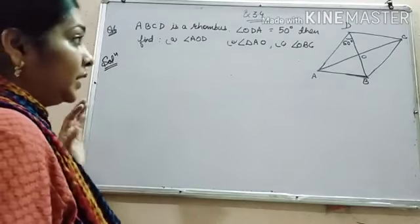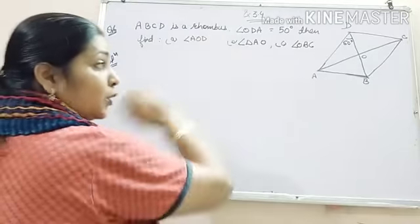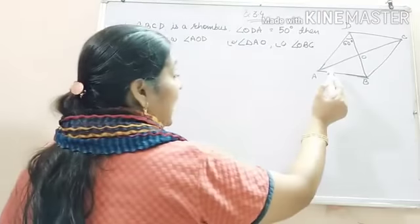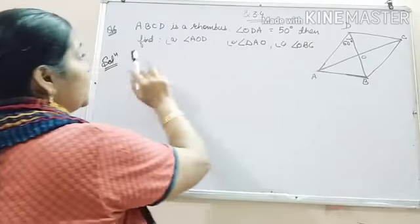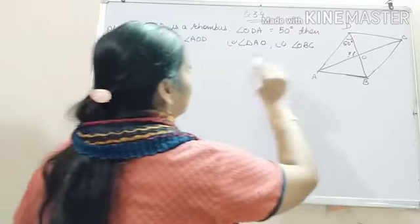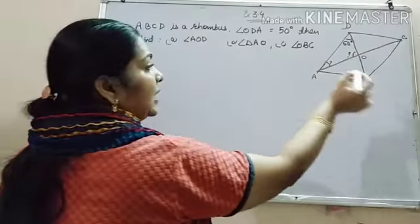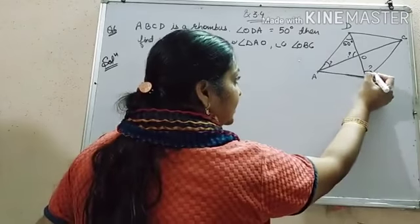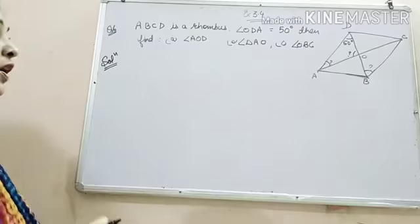In the next problem, the figure is the same rhombus. ABCD is the rhombus and it is given that angle ODA is 50 degrees. Then you have to find angle AOD, angle DAO, and angle OBC. You are supposed to find these three angles.